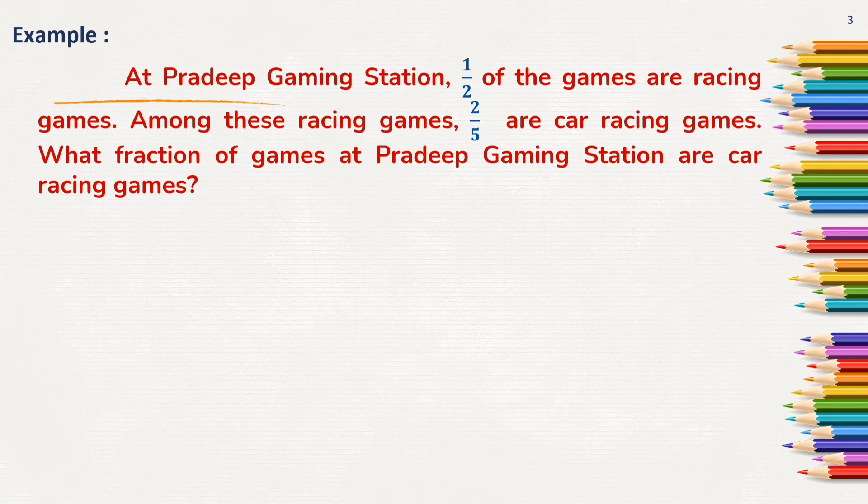Here, which means 2 by 5 are car racing games out of 1 by 2 racing games. So, 2 by 5 of 1 by 2 means we need to multiply to find the answer. Look at the solution.